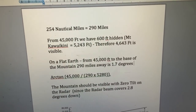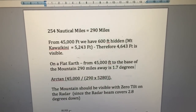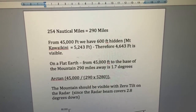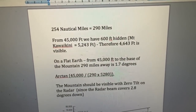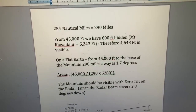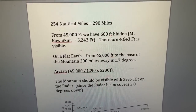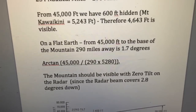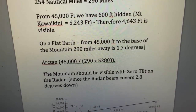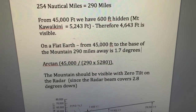Let's go through the calculations. 254 nautical miles equals 290 statute miles. From 45,000 feet, if the Earth is curved, we have 600 feet hidden. Mount Kawaikini is 5,243 feet, therefore 4,643 feet should be visible even with curvature. On a flat Earth we should see it all. From 45,000 feet to the base of the mountain 290 miles away represents an angle downward of 1.7 degrees — calculated using the arctangent of 45,000 divided by 290 miles times 5,280 feet.